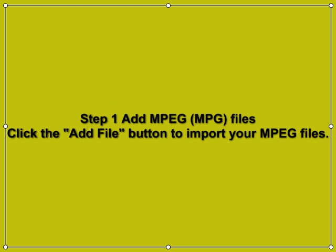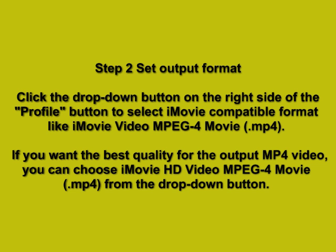Step 1 — Add MPEG/MPG files: Click the Add File button to import your MPEG files. Step 2 — Set Output Format: Click the drop-down button on the right side of the Profile button to select an iMovie-compatible format, such as iMovie Video or MPEG-4 Movie (MP4).